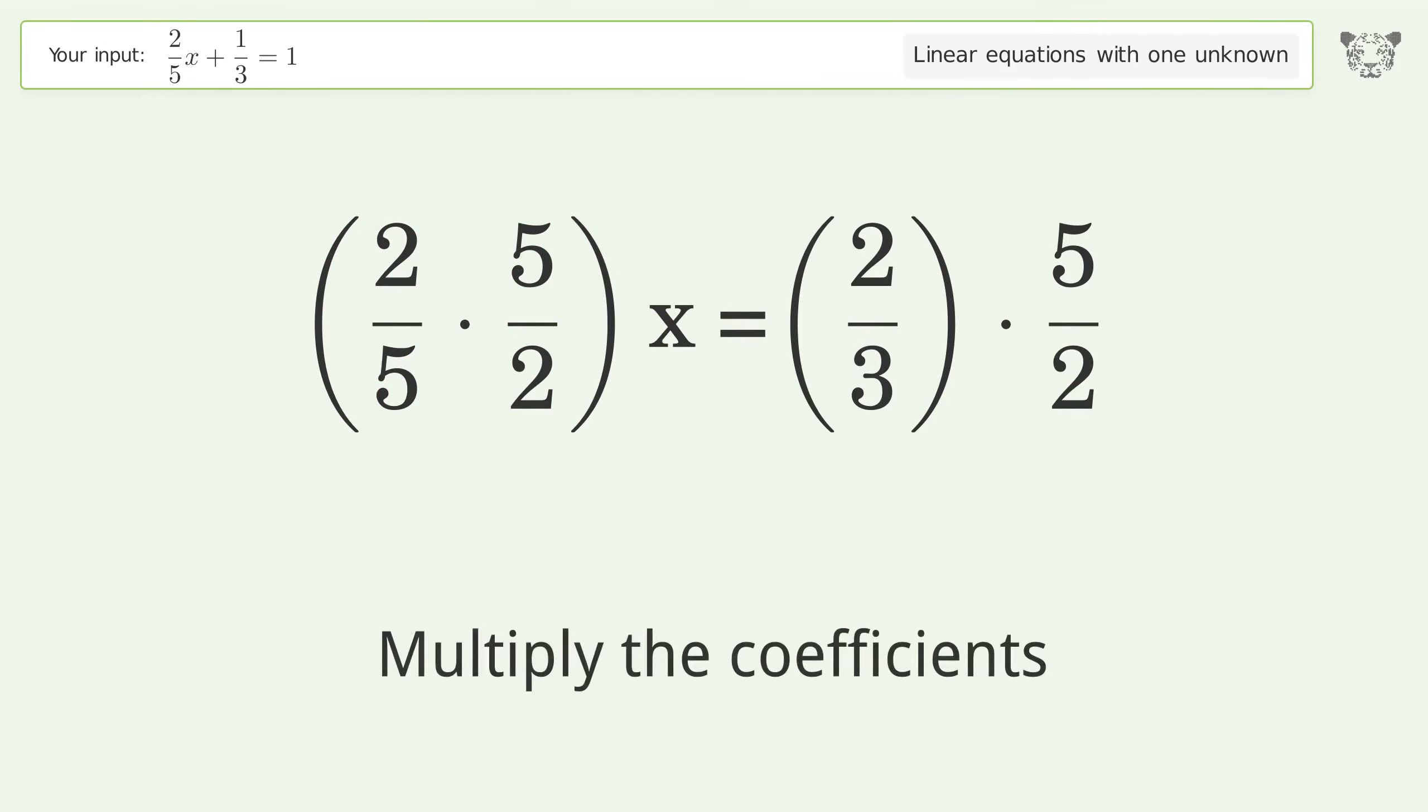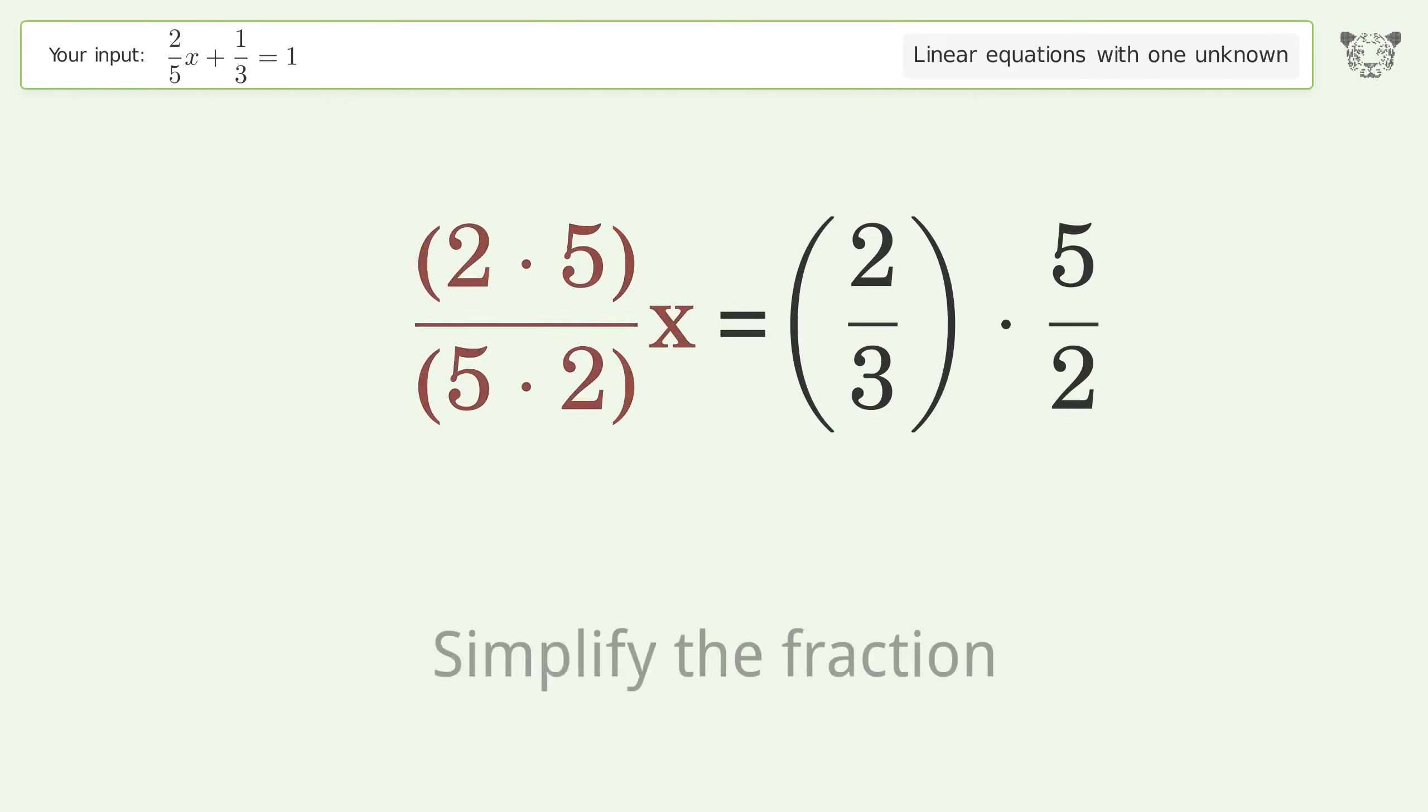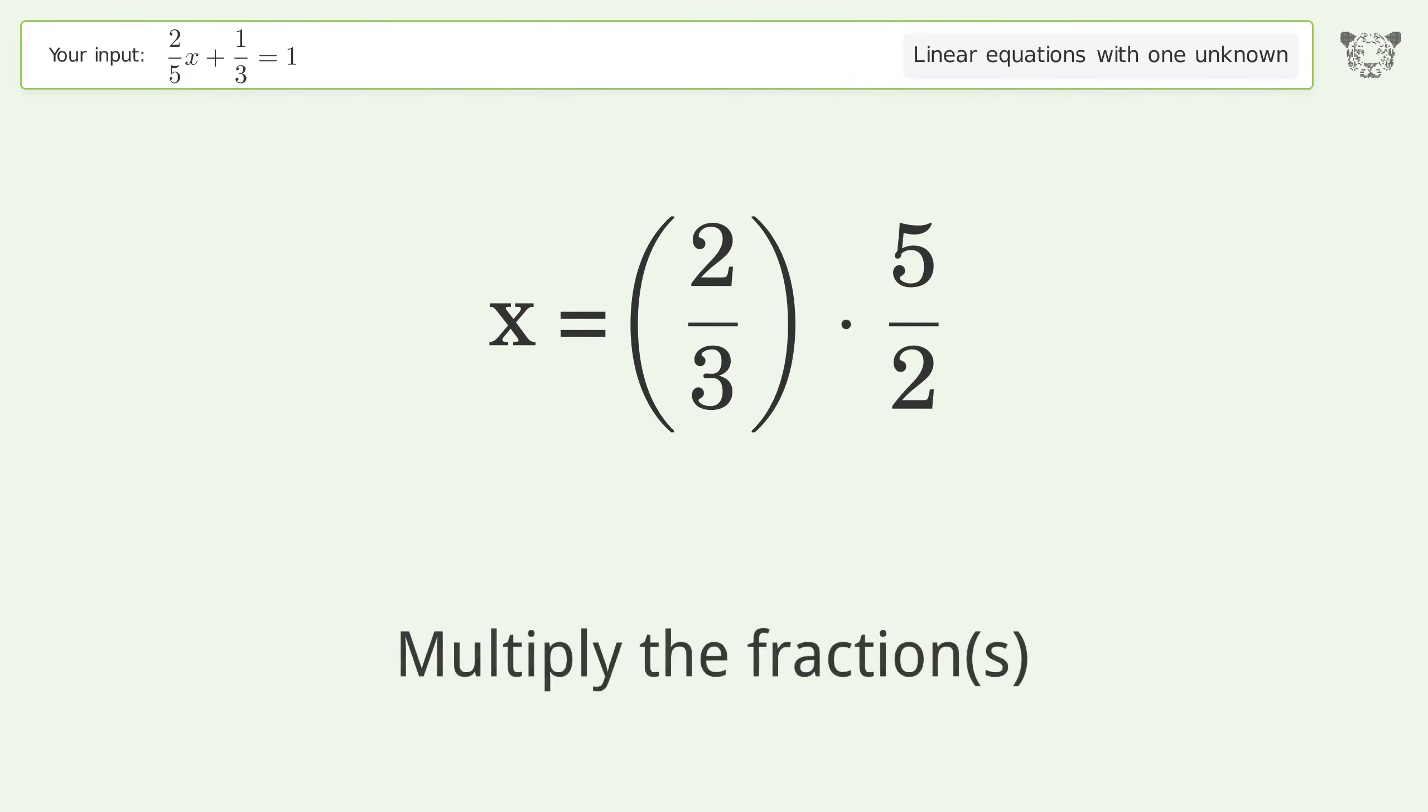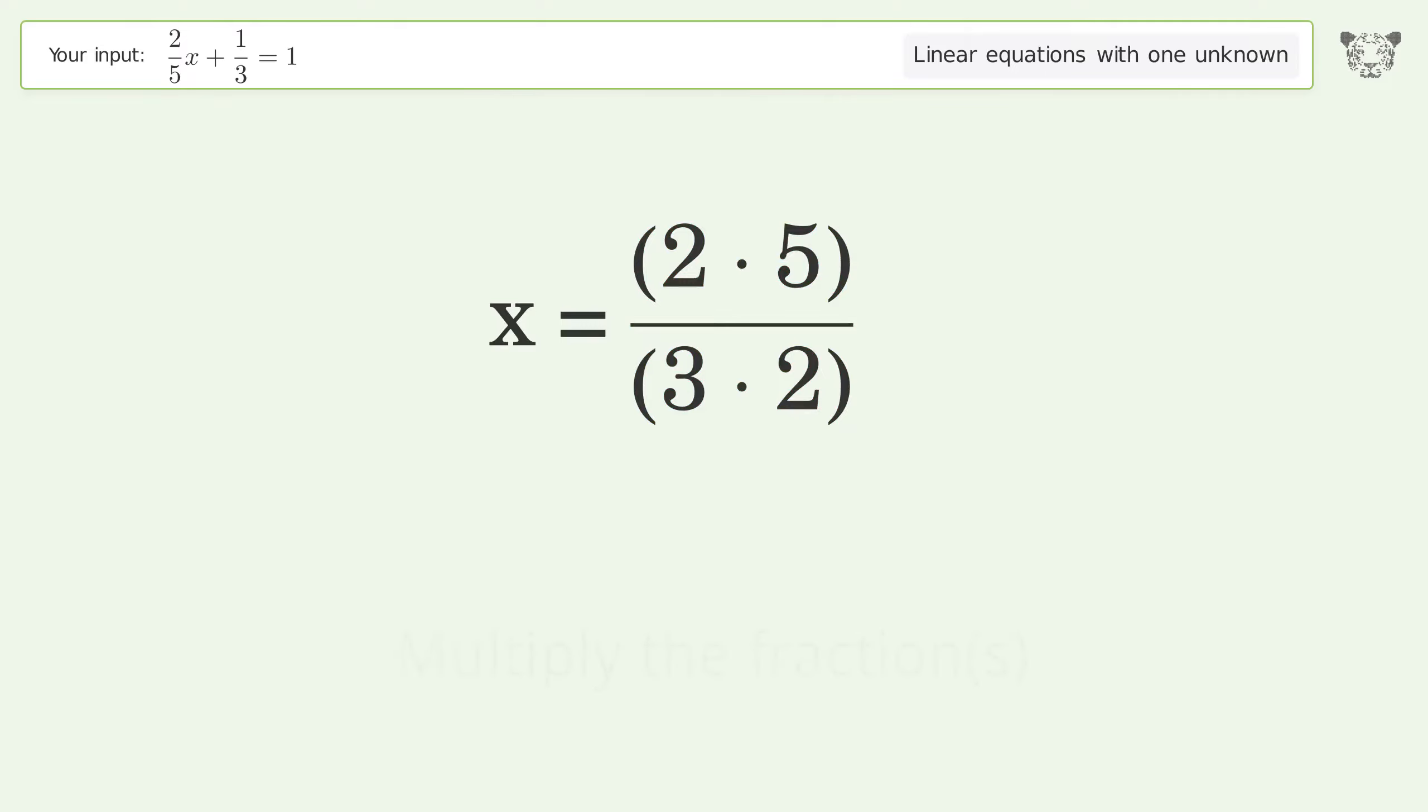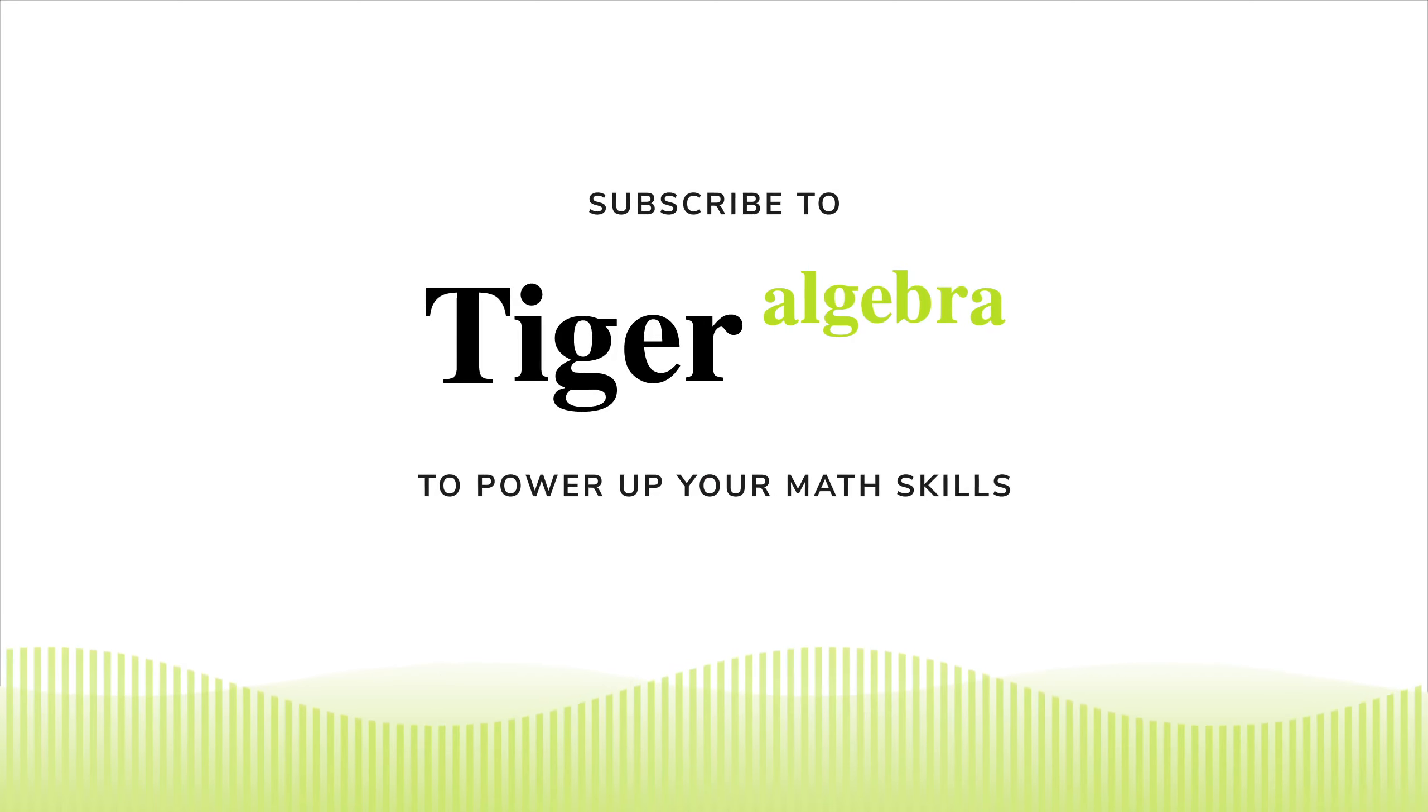Multiply the coefficients. Simplify the fraction. Multiply the fractions. Simplify the arithmetic. And so the final result is x equals 5 over 3.